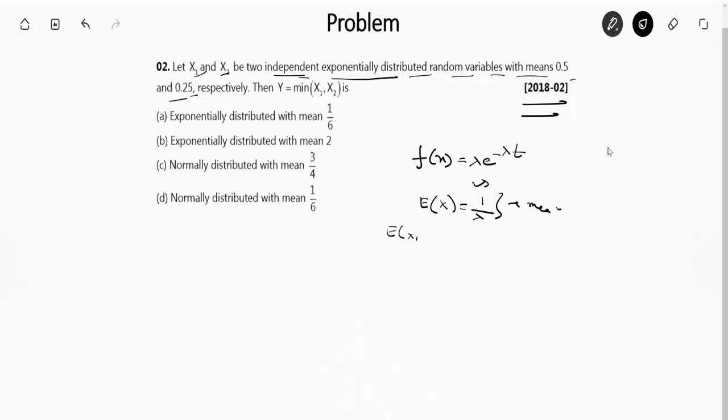So E(X1) = 1/λ1 = 0.5, which means λ1 = 2. Similarly, E(X2) = 1/λ2 = 0.25, which means λ2 = 4.